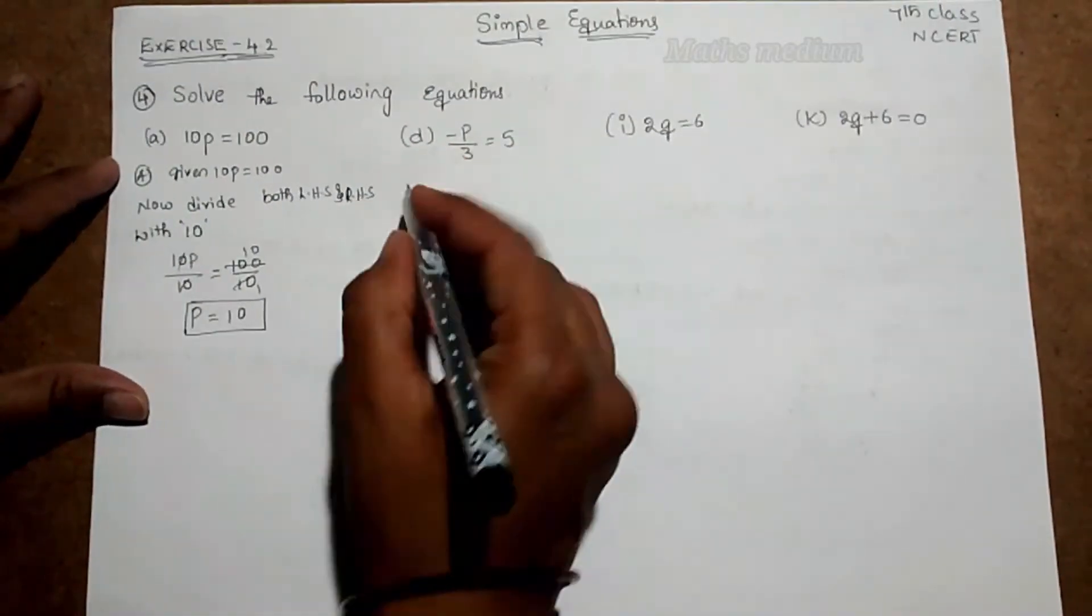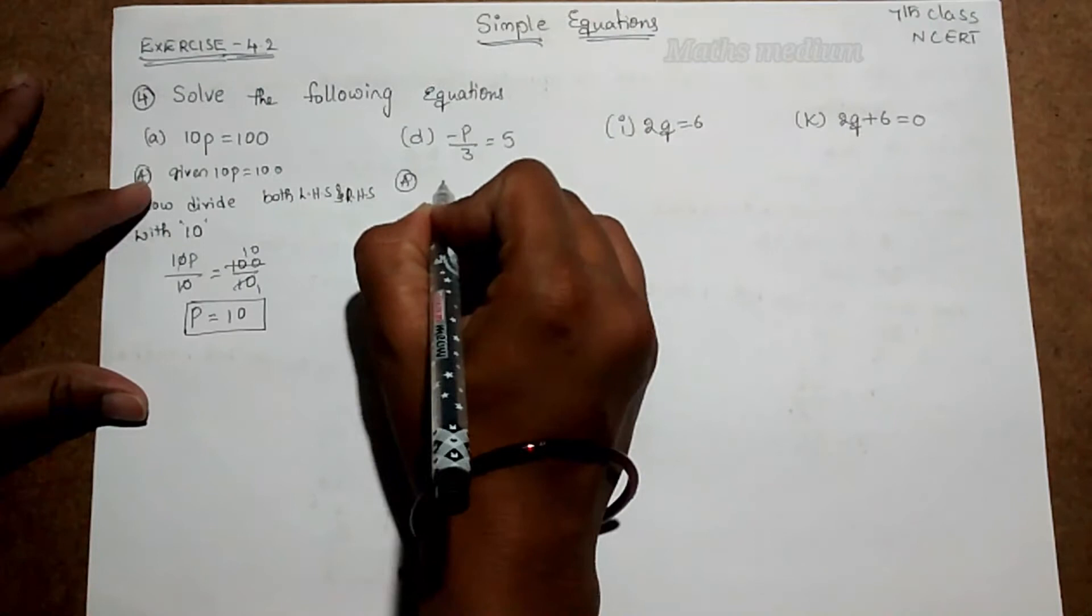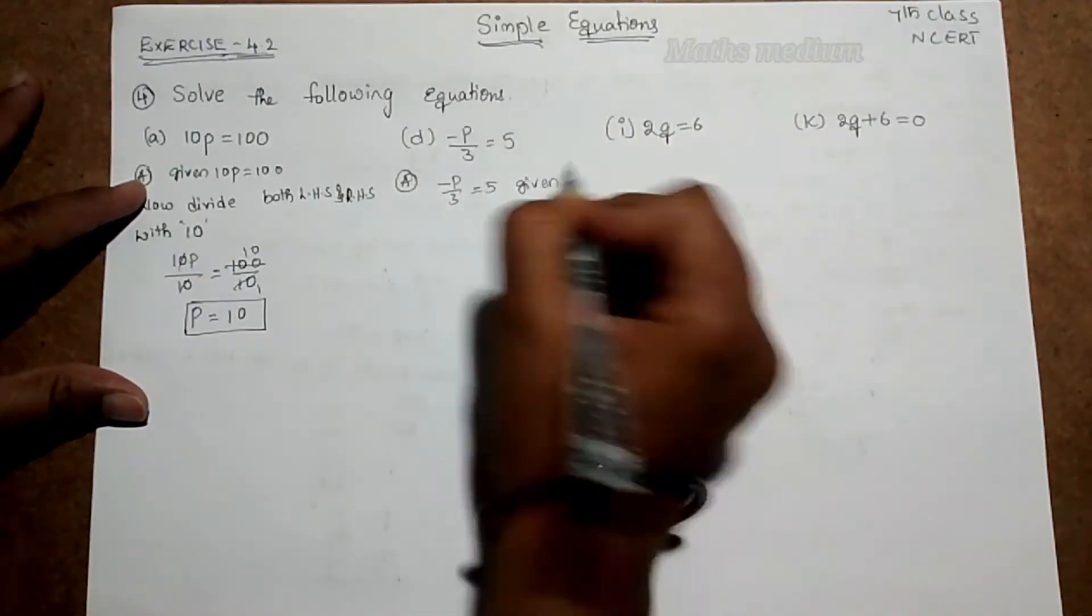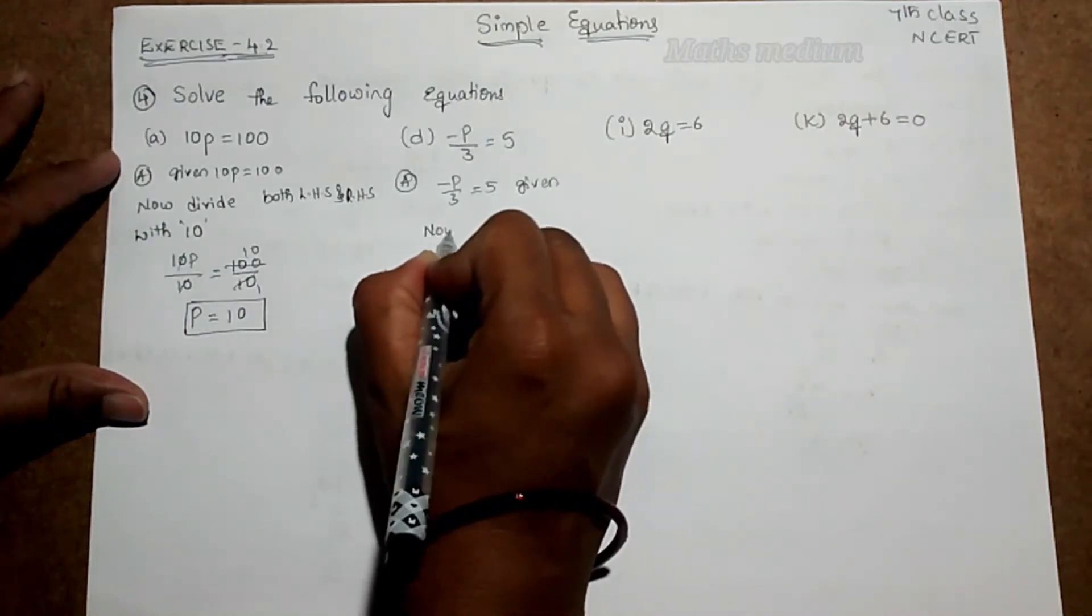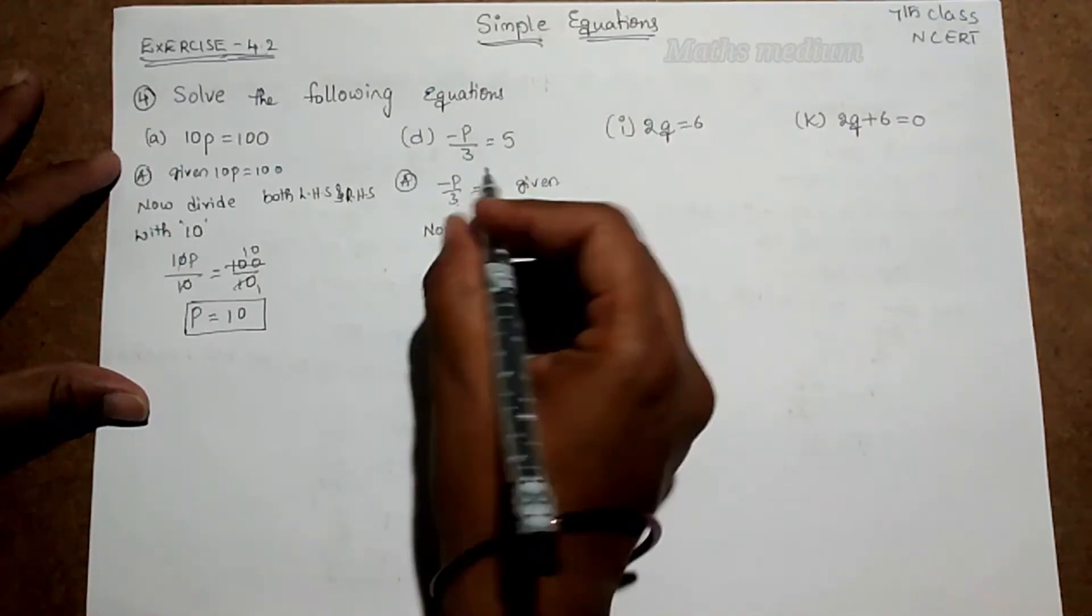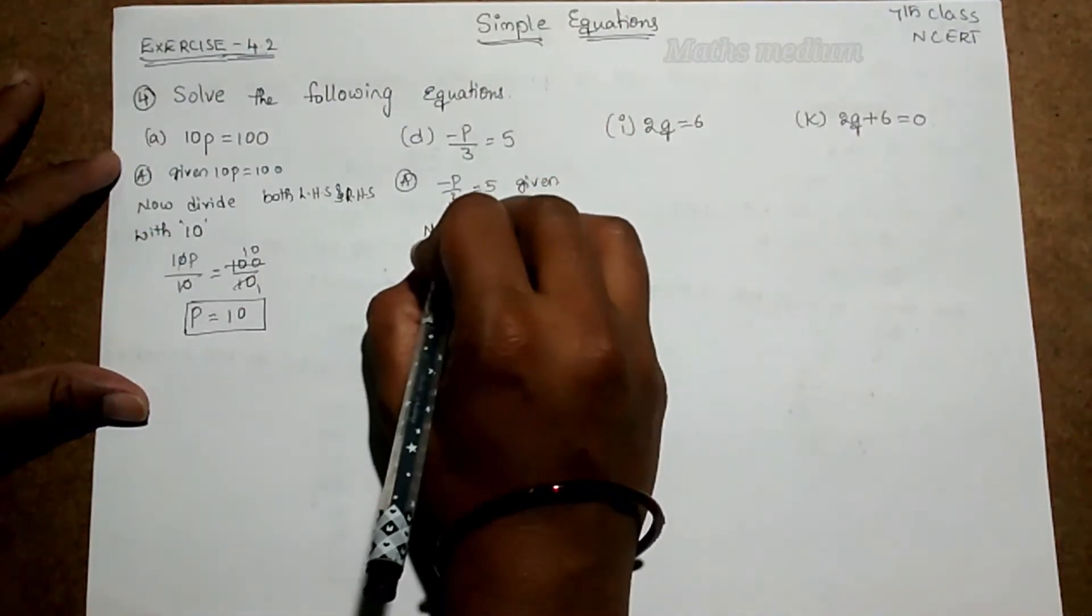Similarly, apply this method for this also. So here minus p by 3 is equal to 5 is the given equation. So now here we are dividing a variable with a constant, so we have to multiply the variable.